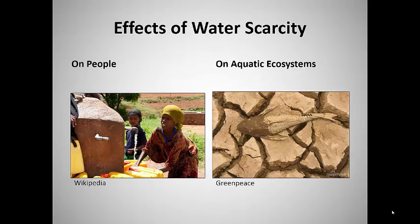Of course, water scarcity affects people, but it also affects the aquatic ecosystems that depend on freshwater for their survival. According to National Geographic, more than 20% of the 10,000 known freshwater fish species have become extinct or imperiled in recent decades.